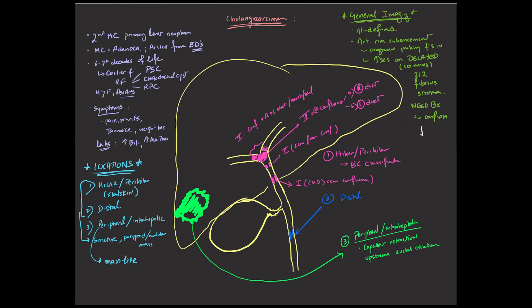A few final comments on some of the general imaging features that I wanted to mention. When you do see these lesions, it's important to remember to look for the upstream ductal dilatation. That can be a clue that there is a neoplastic process involving the biliary tree, and you can see that with either of these locations, the hilar, distal, or peripheral. So that's something to look out for.